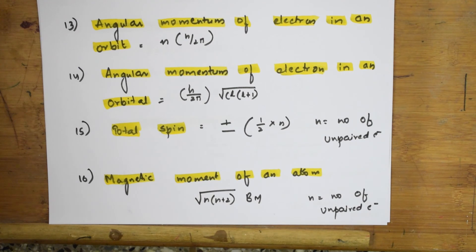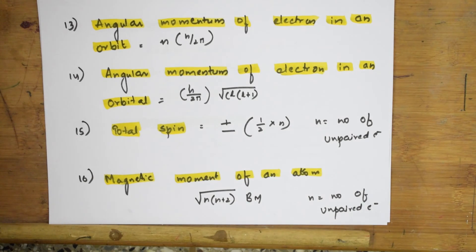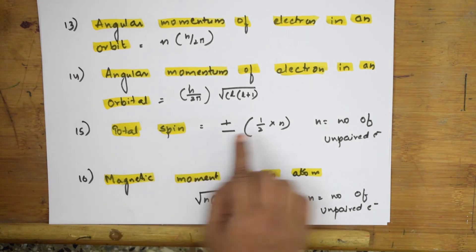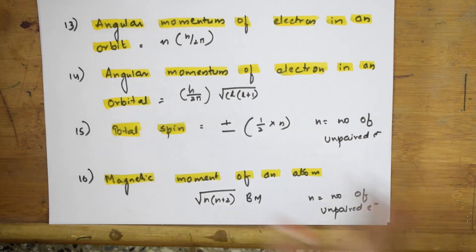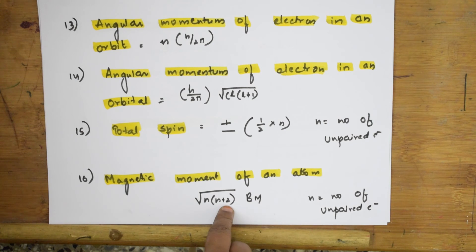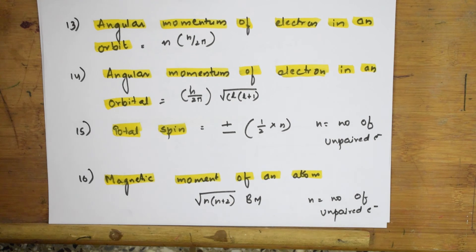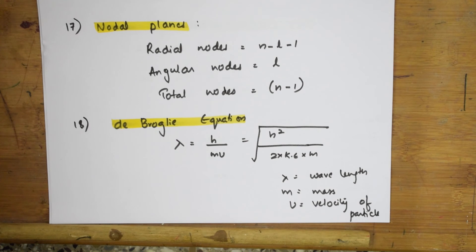For total spin of an atom, the formula is: S = ±½ × n, where n is the number of unpaired electrons — this varies with every element. For the magnetic moment of an atom, the formula is: μ = √(n(n+2)) Bohr magnetons, where n is again the number of unpaired electrons. To find n, take the atomic number, write the electronic configuration, fill orbitals using Hund's rule, and count the unpaired electrons.